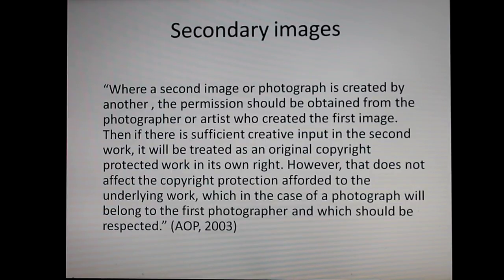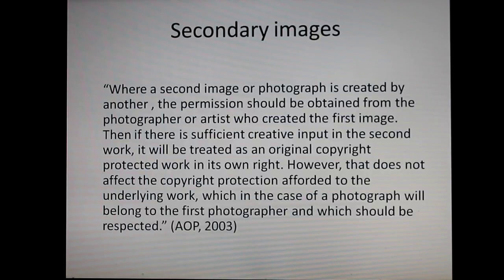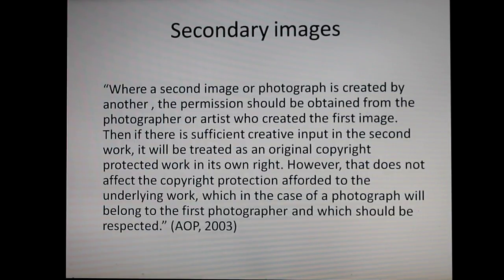On the other hand, this caption from Beyond the Lens covers the borderline between secondary work and appropriated images. Where a second image or photograph is created by another, the permission should be obtained from the photographer or artist who created the first image. Then if there is sufficient creative input in the second work, it will be created as an original copyright-protected work in its own right. However, that does not affect the copyright protection afforded to the underlying work, which in the case of a photograph will belong to the first photographer and which should be respected. Unless the secondary work has a significant amount of creative change or input, the copyright belongs to the first image's author. Any copyright on the first image is still in place, so if the secondary image breaches this copyright without the original author's permission, then the first author has the right to sue the secondary author.